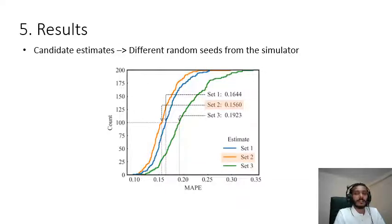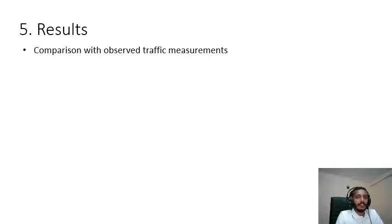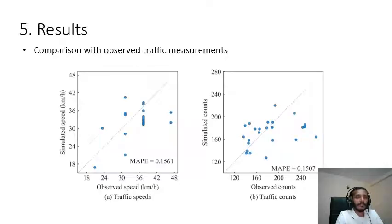Let's compare the observed traffic measurements versus the simulated traffic measurements. On the left hand side we compare the simulated speed versus the observed speeds, and on the right hand side we compare the simulated counts versus the observed count. In both occasions we can see that the mean absolute percentage error is around 0.15 and the points are symmetrically distributed along the 45 degree line.